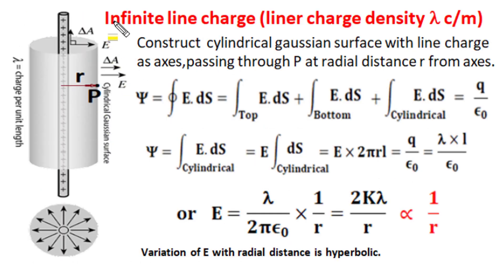To find out electric field of this infinite line charge of linear charge density lambda coulomb per meter, we have constructed a cylindrical Gaussian surface with line charge as its axis. And this Gaussian surface is passing through our observation point P, which is at radial distance from central axis of line charge small r.